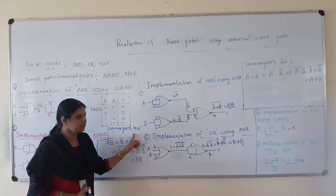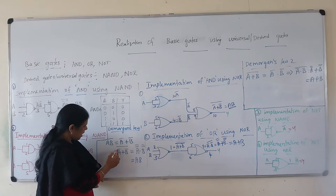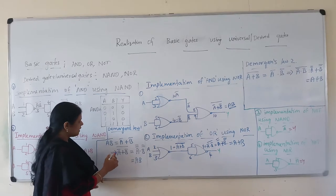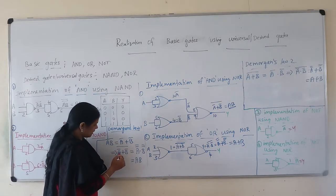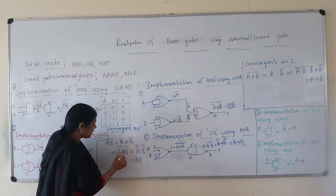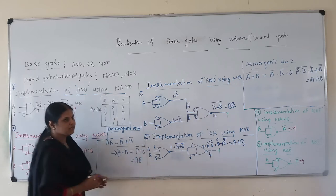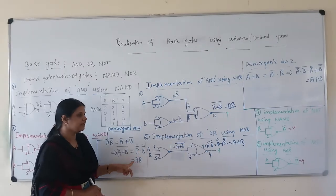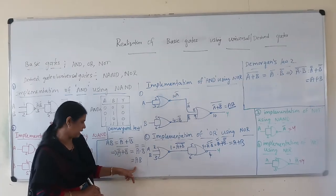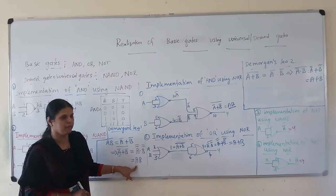Once again, if I do the complement to the expression A bar plus B bar, that expression becomes A bar plus B bar, all bar. Because of double complementation, this variable becomes A double bar, this sum will become the product, and B will become B double bar. As we know, if you do the double complement for any variable, you get the regular form of the variable. Therefore A double complement gives A, and B double complement gives B — therefore you get AB.